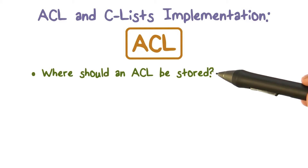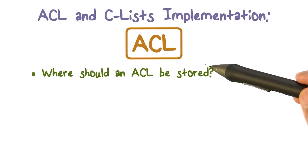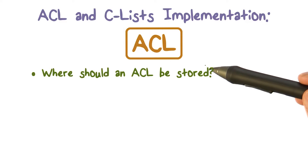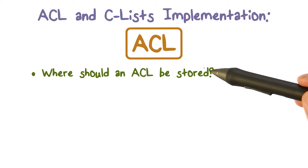Remember, ACL is per object or per resource. It tells us a user ID and what access that user has, the next user ID and what access that user has, and some number of entries like that. By the way, these are called access control entries, or ACEs.